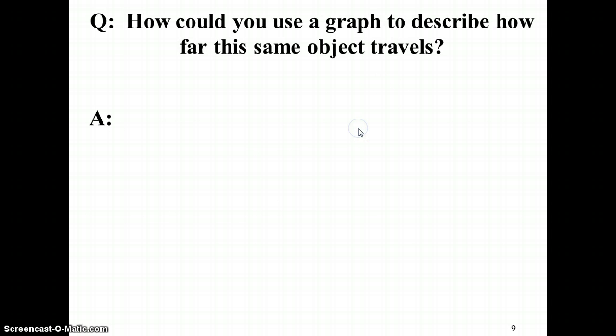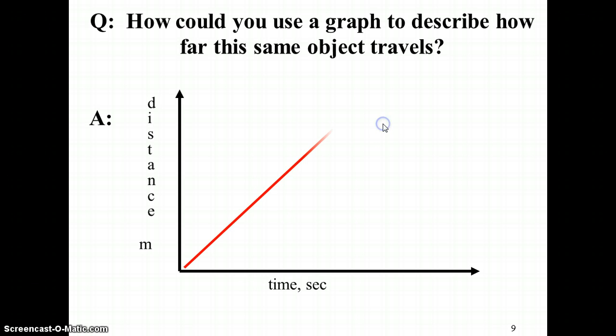Now, we can also look at distance. So if we had an object moving at a constant velocity, it would pick up distance at a gradual rate. So notice we get a straight line here, up and to the right with a positive slope.